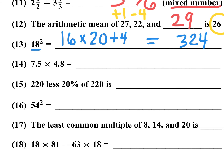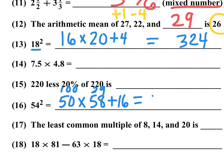Skipping ahead to number 16: 54 squared. Notice 54 is 3 times 18, so you could use 9 times 324. Or use the same technique: subtract 4 to get 50, add 4 to get 58, and add 4 squared (16) to compensate. Now 50 times 58 — double and halve: half of 58 is 29, so 2900 plus 16 equals 2916. The answer is 2916.